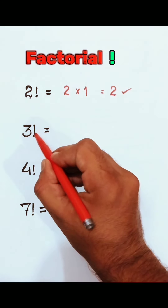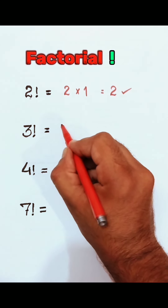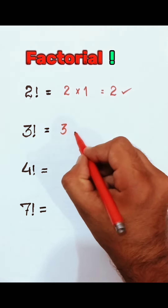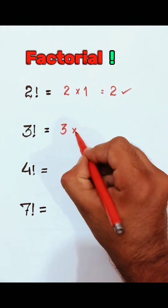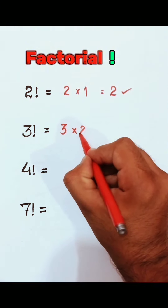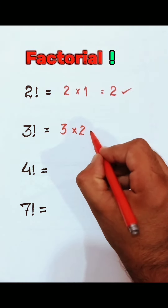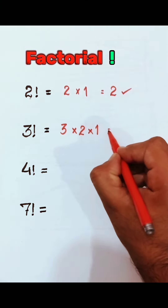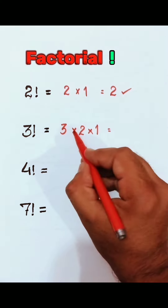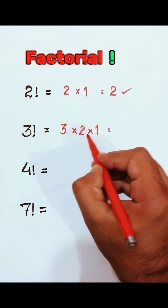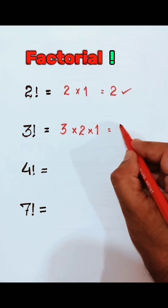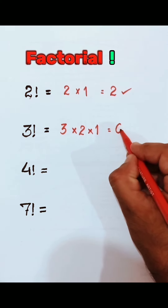3 factorial means 3 times 2 times 1. That equals 3 times 2, which is 6. 6 times 1 equals 6.